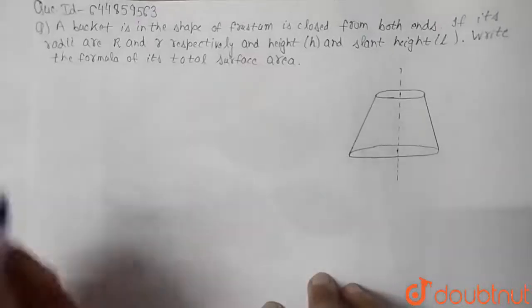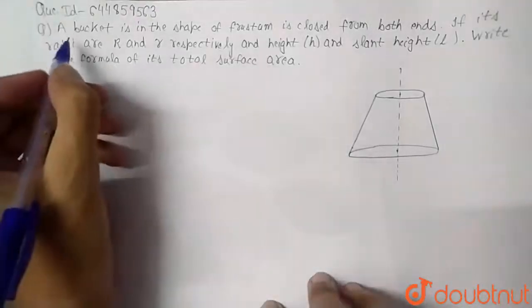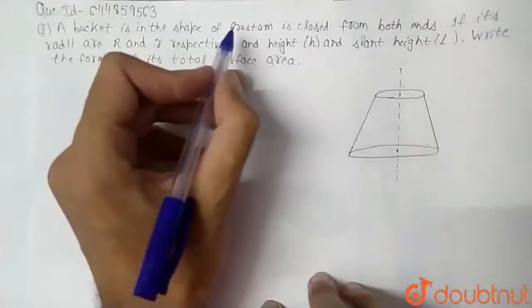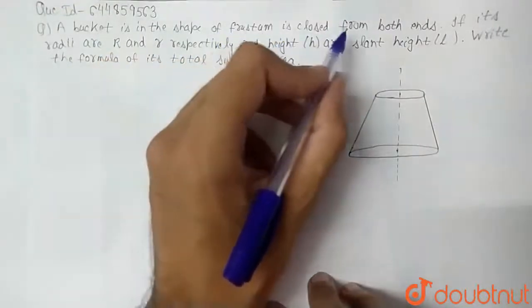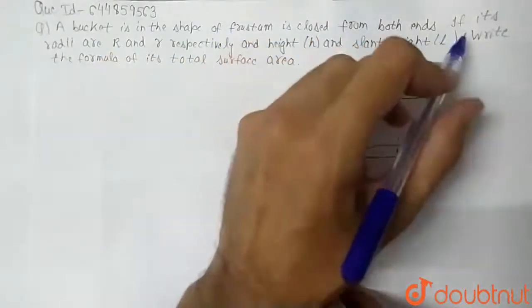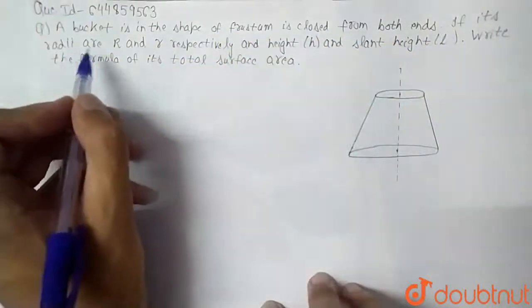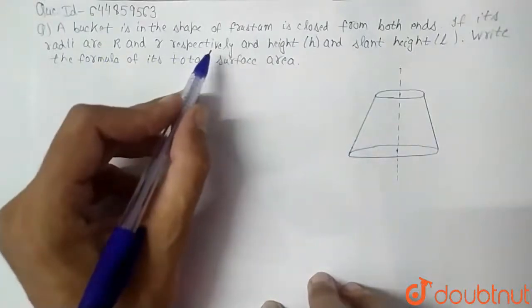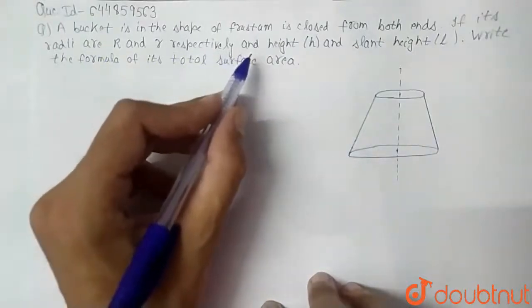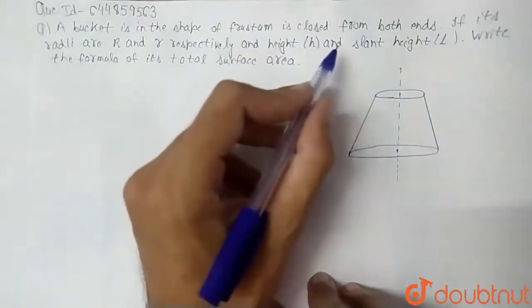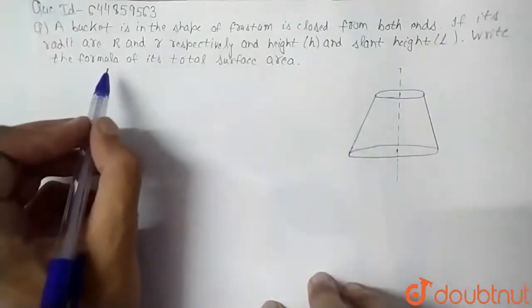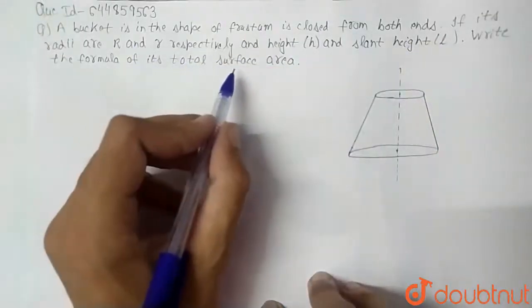Today's question is: a bucket is in the shape of a frustum, closed from both ends. If its radii are capital R and small r respectively, and height H and slant height L, write the formula for its total surface area.